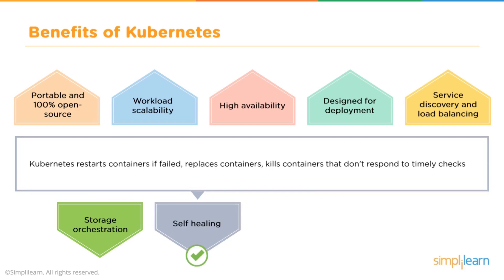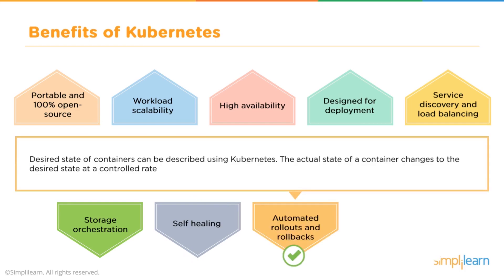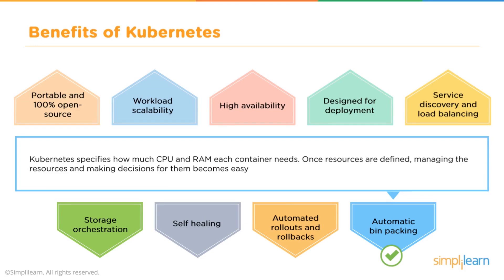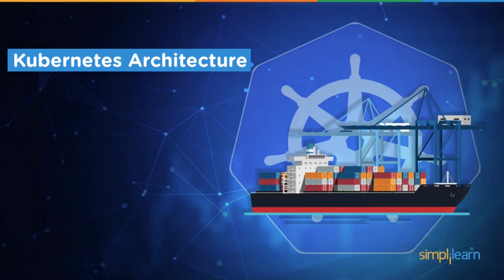Kubernetes is also a self-healing environment — if something fails, Kubernetes will detect that failure and then either restart, kill, or replace the process. Because of that, you also have automated rollouts and rollbacks in case you need to manage the state of the environment. And finally, you have automatic bin packaging, where you can specify the compute power being used from CPU and RAM for each container.